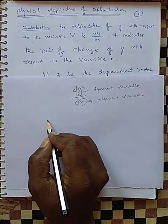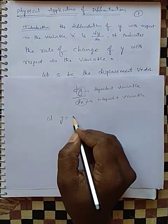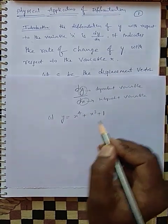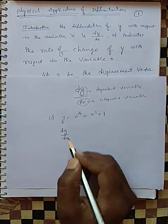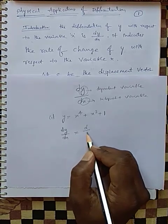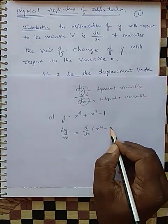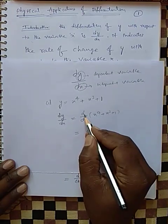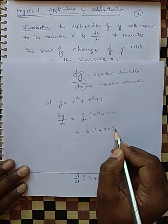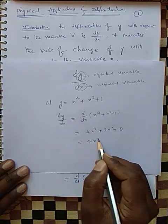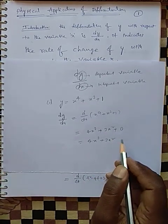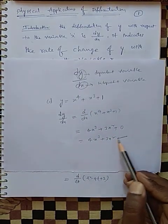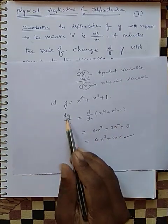Here y is depending on x. For example, let us take y in terms of x: y = x⁴ + x³ + 1. Now find dy by dx — differentiate y with respect to x. That equals d/dx of x⁴ + x³ + 1, which gives 4x³ + 3x² + 0 = 4x³ + 3x². So y is depending on x, and y is changing with respect to x as this function.